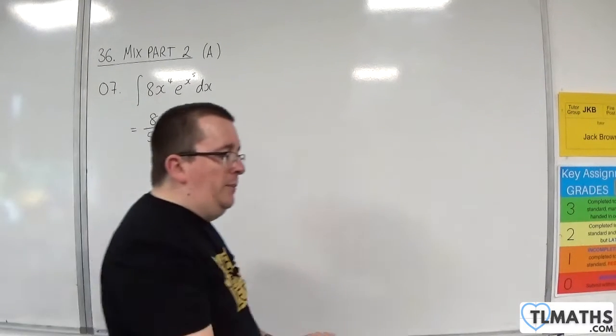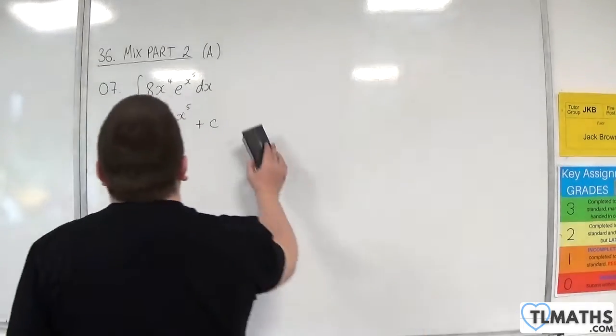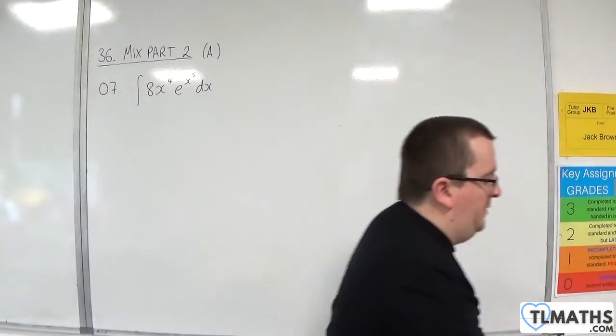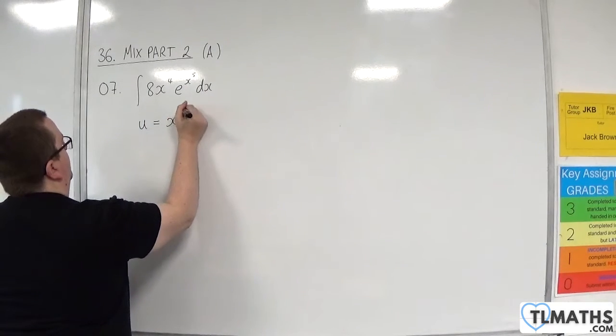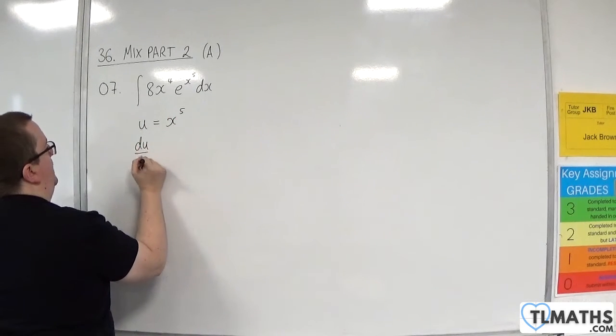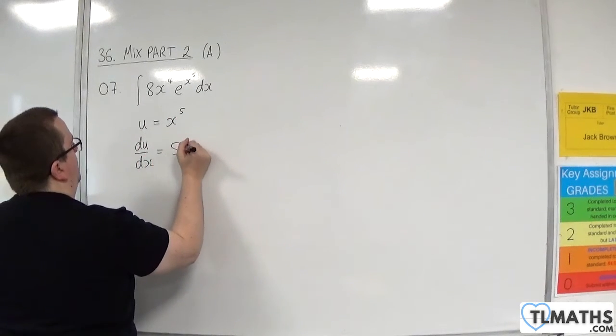OK, so if you want to do this by substitution, you can, if you're a little bit unsure about that method. So use u is equal to x to the 5, du by dx would be 5x to the 4.